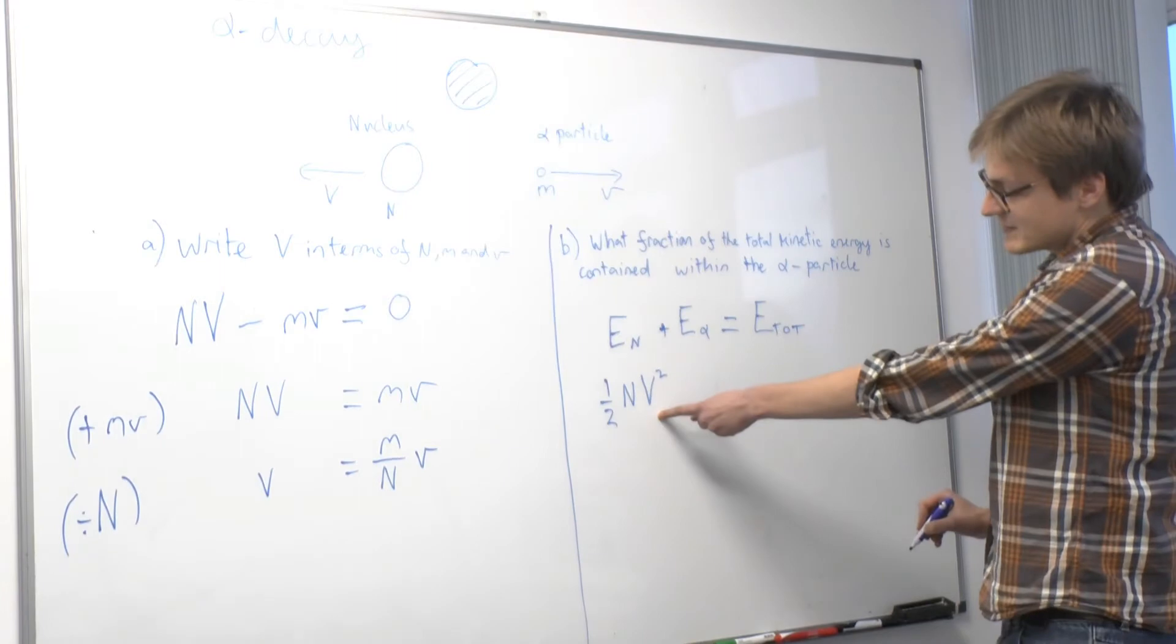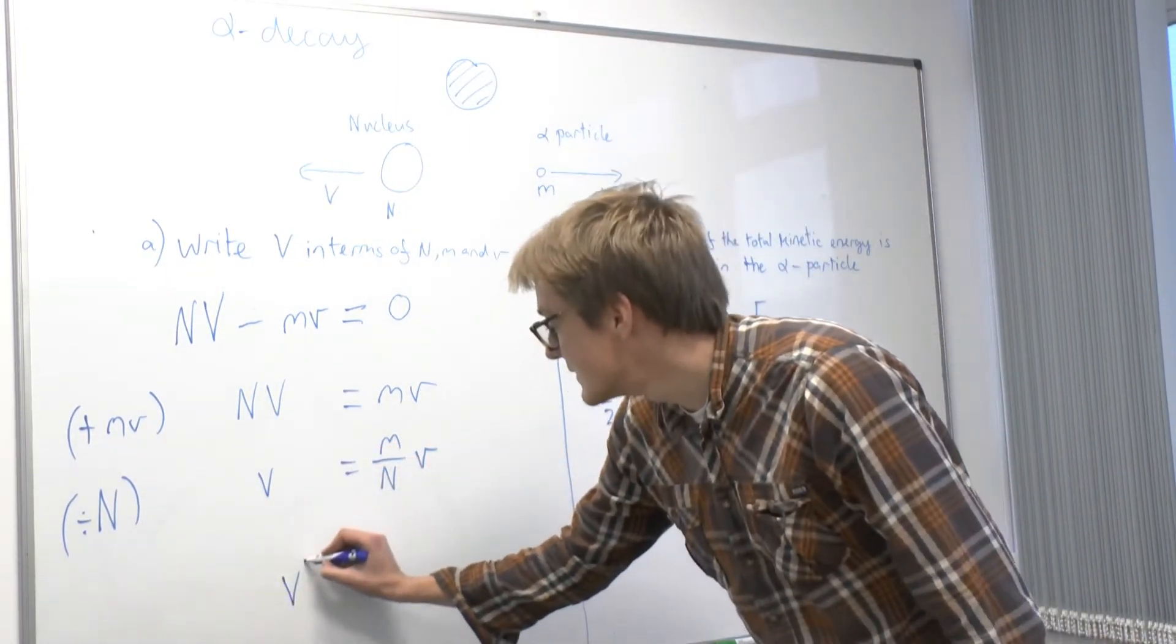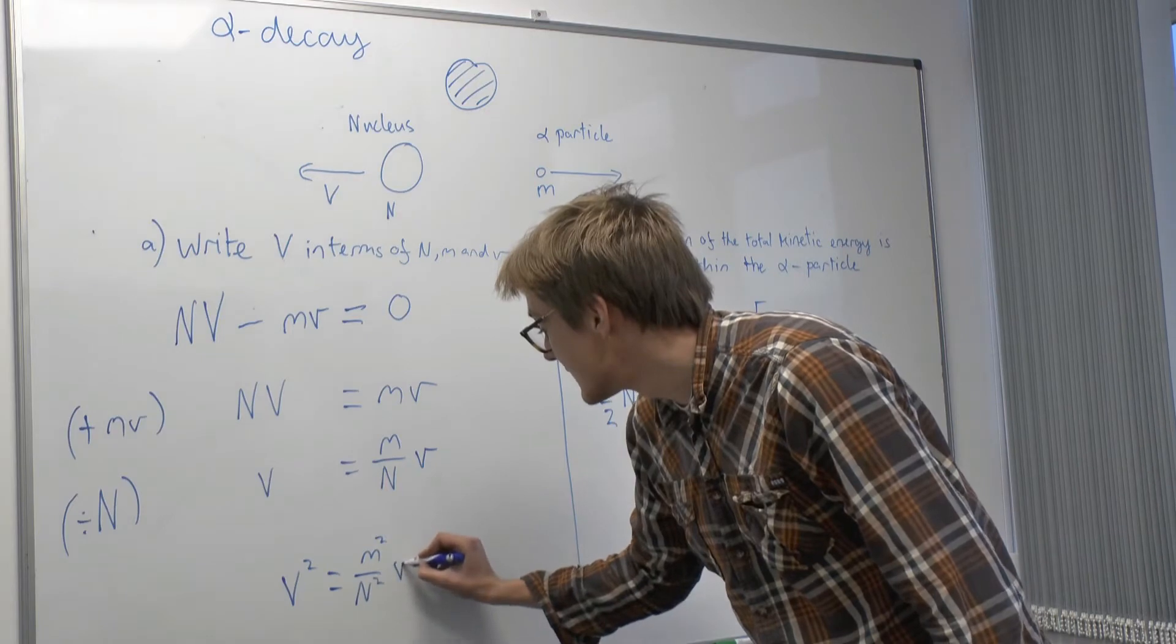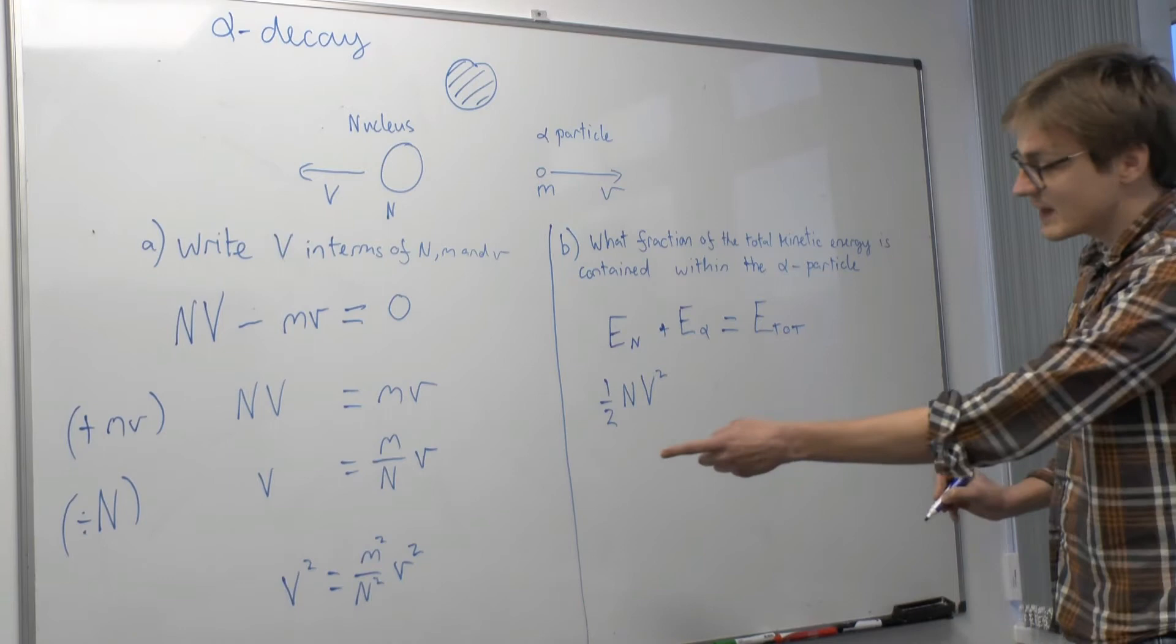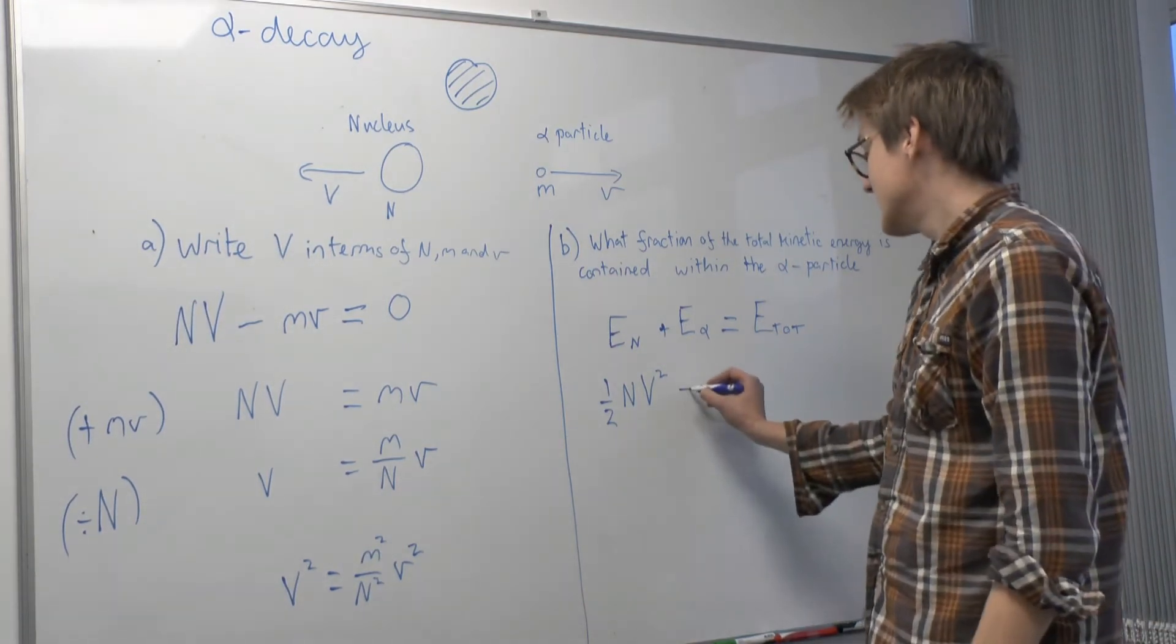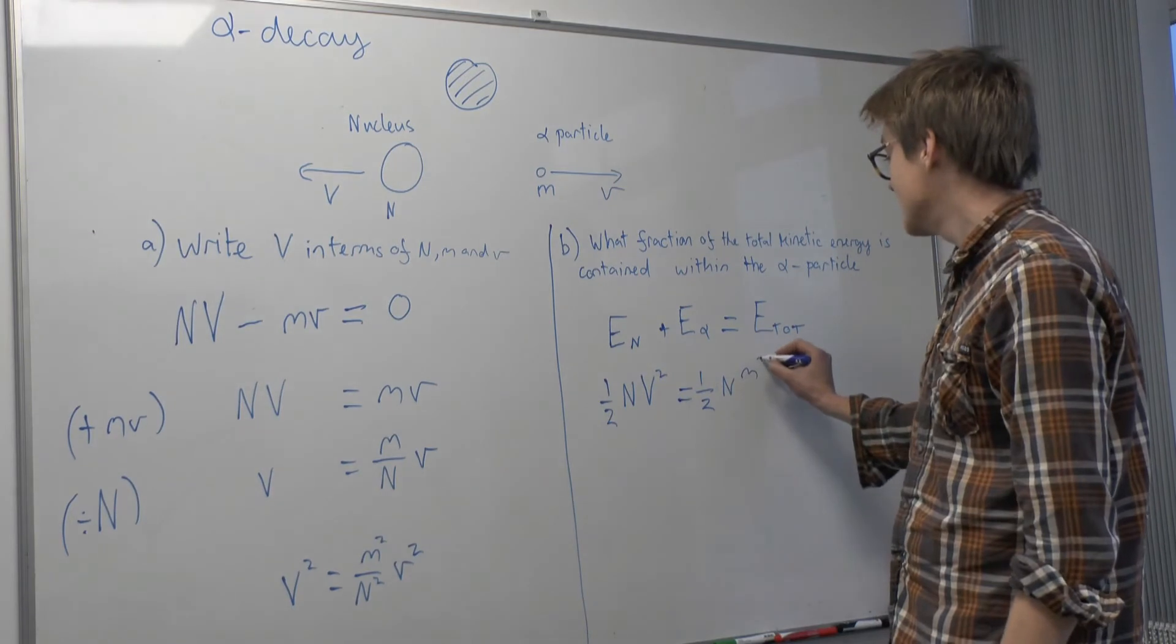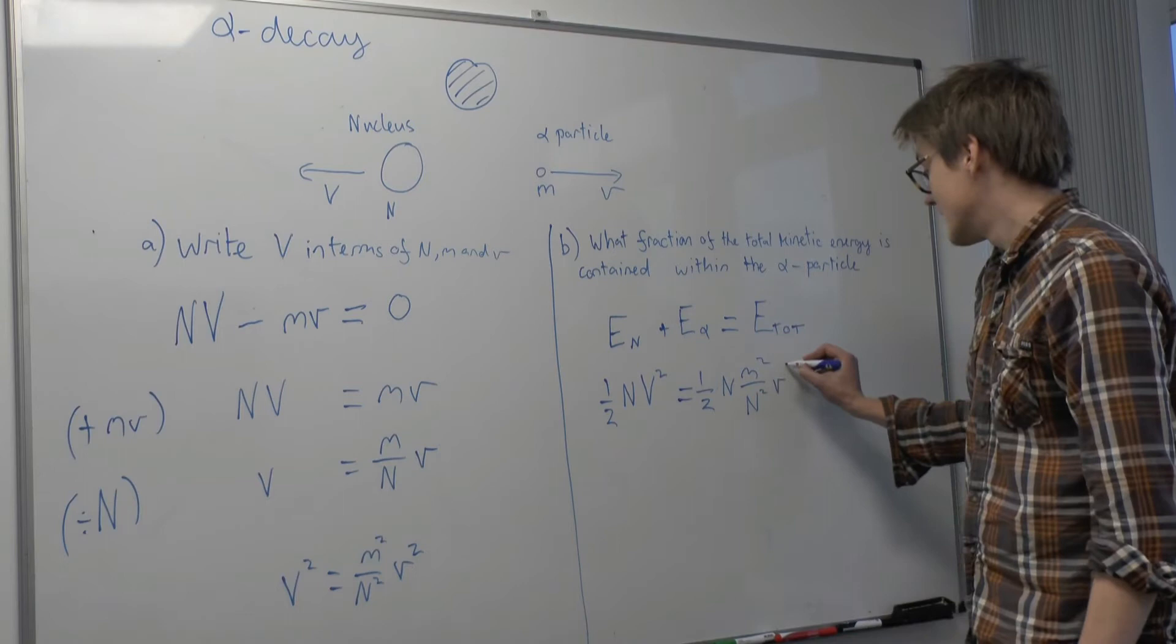Now we've got an expression for V and we can square it. So V squared equals little m squared over big N squared times little v squared. So once we've done that, we can substitute that into this.